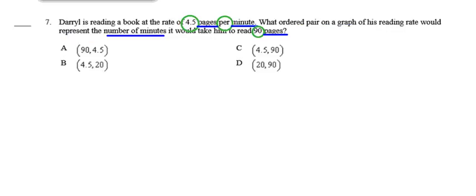Question 7. Daryl is reading a book at the rate of 4.5 pages per minute — every minute he's reading 4.5 pages. What ordered pair on a graph of his reading rate would represent the number of minutes it would take him to read 90 pages?